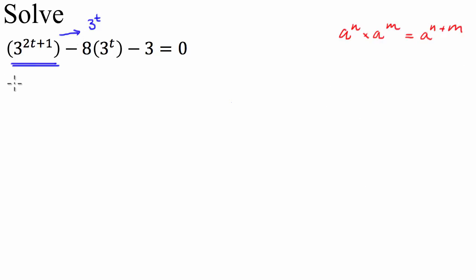So I'm going to go, well, this thing is going to be equal to 3 to the power of 2t times by 3 to the power of 1. I can keep that in a bracket if you like, and I'm just going to minus 8 times 3t minus 3 equals 0. A lot of the index laws we're going to use today, we're going to use them in reverse, so it's important to know them quite well. So what are we going to do next?